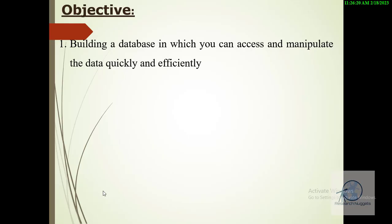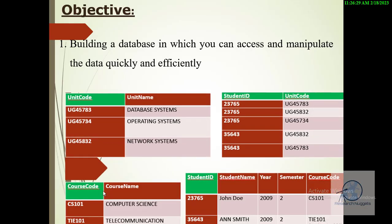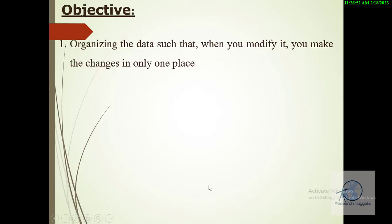The third objective is that the database should be designed in such a way that we can easily access and manipulate our data quickly and efficiently as shown. When you have data organized in this particular manner and I need to access courses, I can straight go to the courses table and access it. If I needed to access the students' details, I can quickly go to the students' relation and access the details from there.